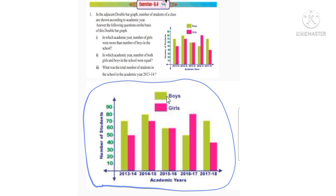Boys are indicated in green color and girls are indicated in pink color. In which academic year is the number of girls more than that of boys? That means, we look for where the pink bar is higher than the green bar. Observe the bar graphs. Pink is more than green in 2016 to 17.